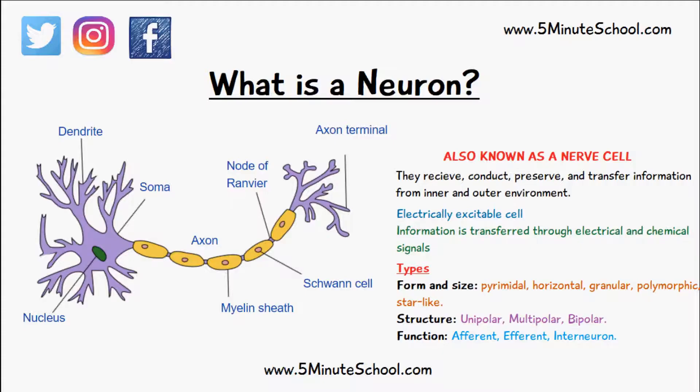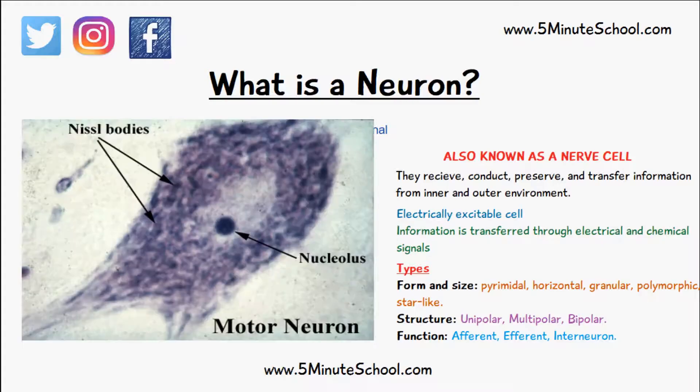What's contained inside a neuron or nerve cell is very similar to other cells. The soma will have a nucleus and a cytoplasm. The difference is that neurons contain something called Nissl bodies, which are aggregations of rough endoplasmic reticulum.